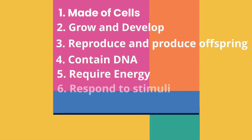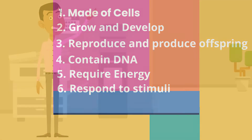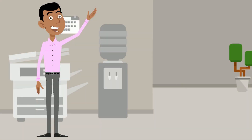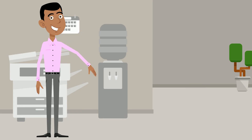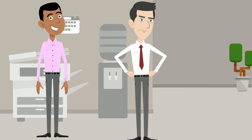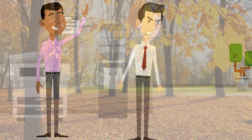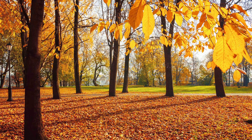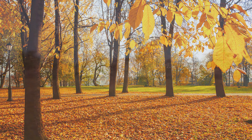Living things respond to stimuli in the environment. Examples include waving, getting angry, the leaves changing colors, and animals running.